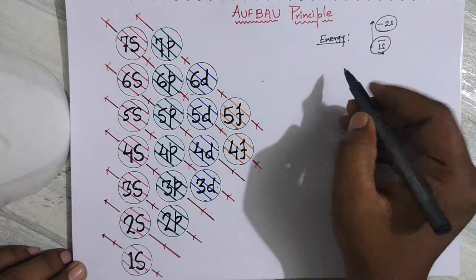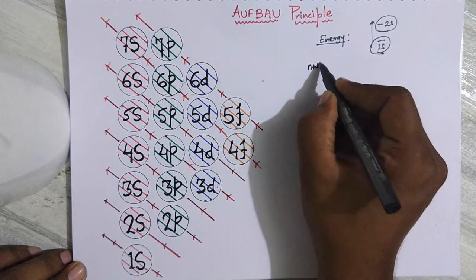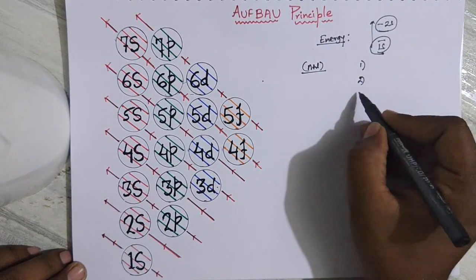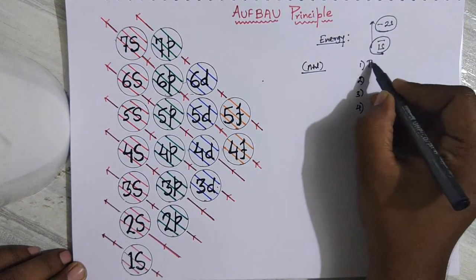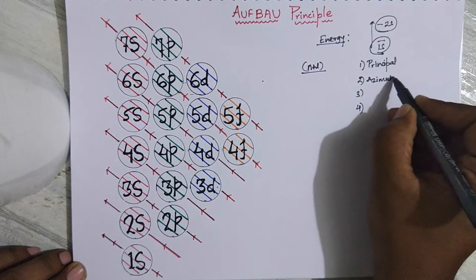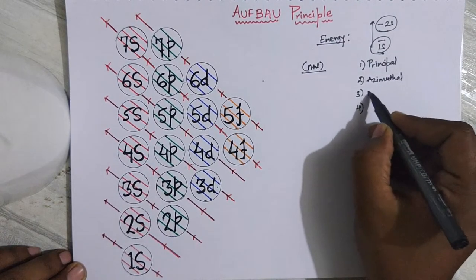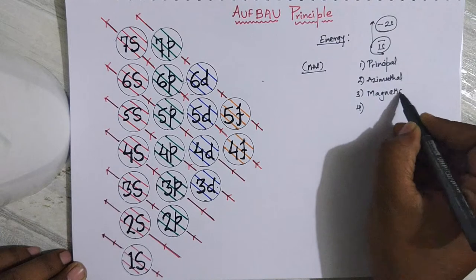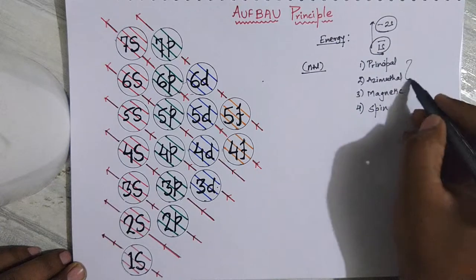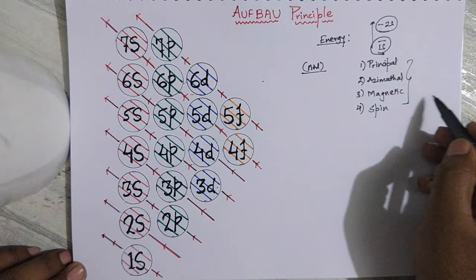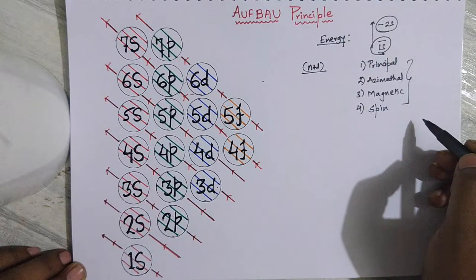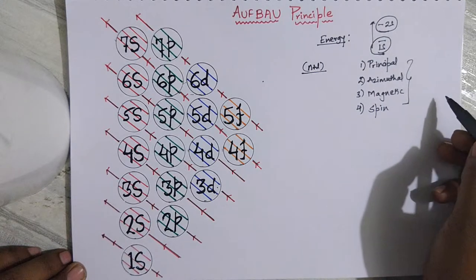There is one more rule that the Aufbau principle follows: the n+l rule. Every electron has four quantum numbers: the principal quantum number (n), the azimuthal quantum number (l), the magnetic quantum number, and the spin quantum number. For every unique electron, these four quantum numbers will never be the same — it is like a unique address for each electron.